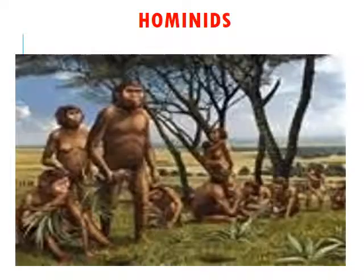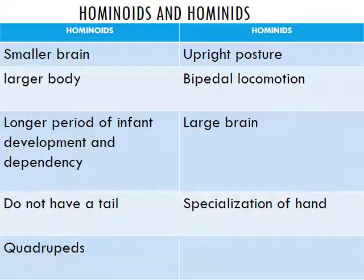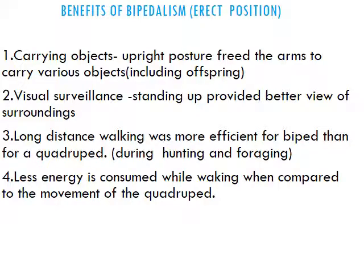A simple way to learn the difference between hominoids and hominids: hominoids had smaller brains; hominids had larger brains. Hominoids had larger bodies and were quadrupeds; hominids had bipedal locomotion. Hominoids had a longer period of infant development and dependency and no tail; hominids had specialization of hands.